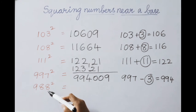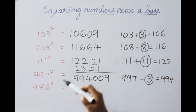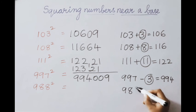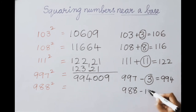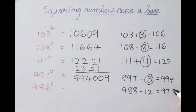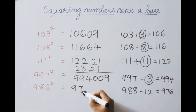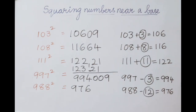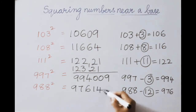Next example: 988 squared. Base is 1000. 1000 minus 988 equals 12 — deficient value is 12. Subtract: 988 minus 12 equals 976 — that is the first part answer. Now square the deficient value: 12 squared equals 144. Write down the value, so the answer is 976144.